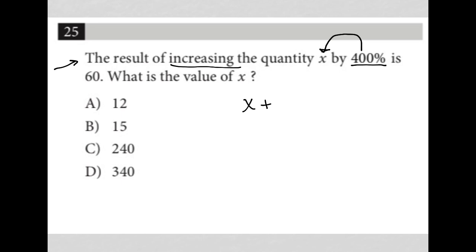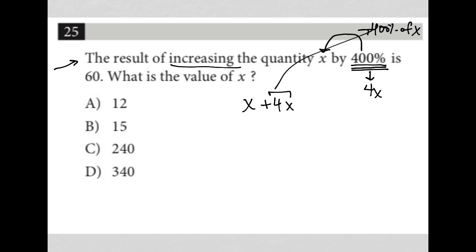Anytime we use a percentage in an equation, we always want to convert it into its decimal form. The decimal form for 400% is actually 4. So 400% of x is the same as 4x. So we're adding 4x to our x — this represents 400% of x.